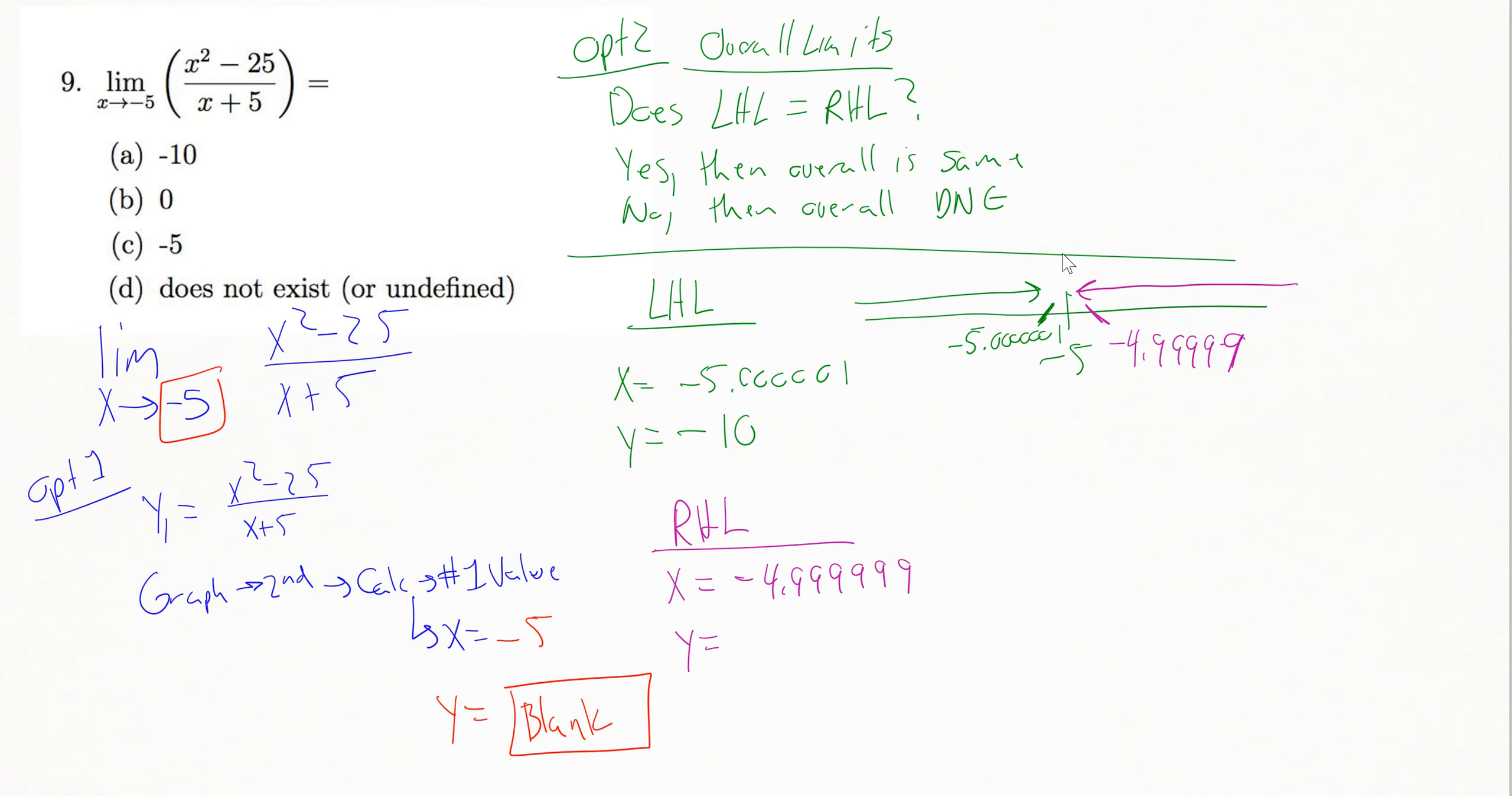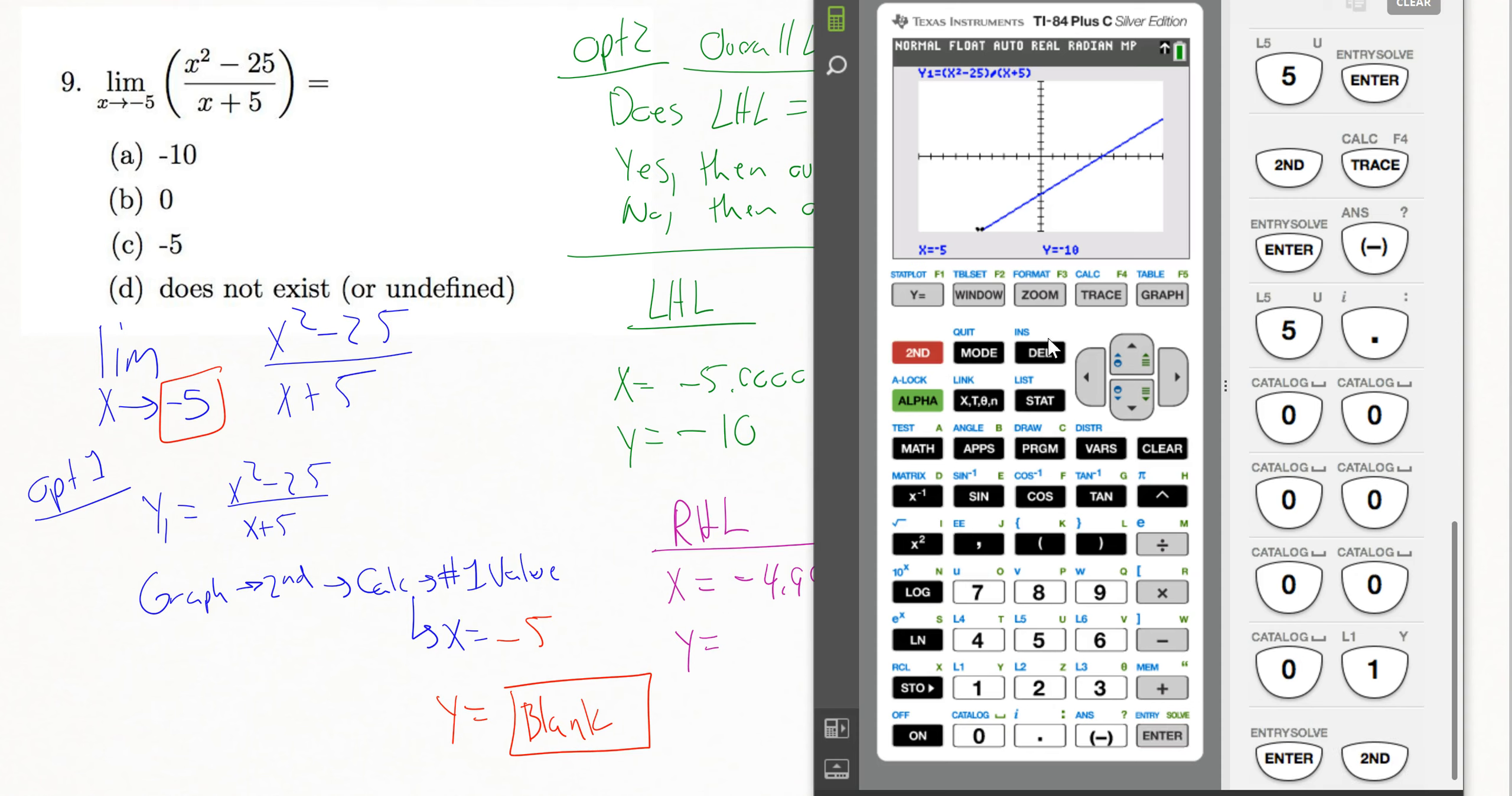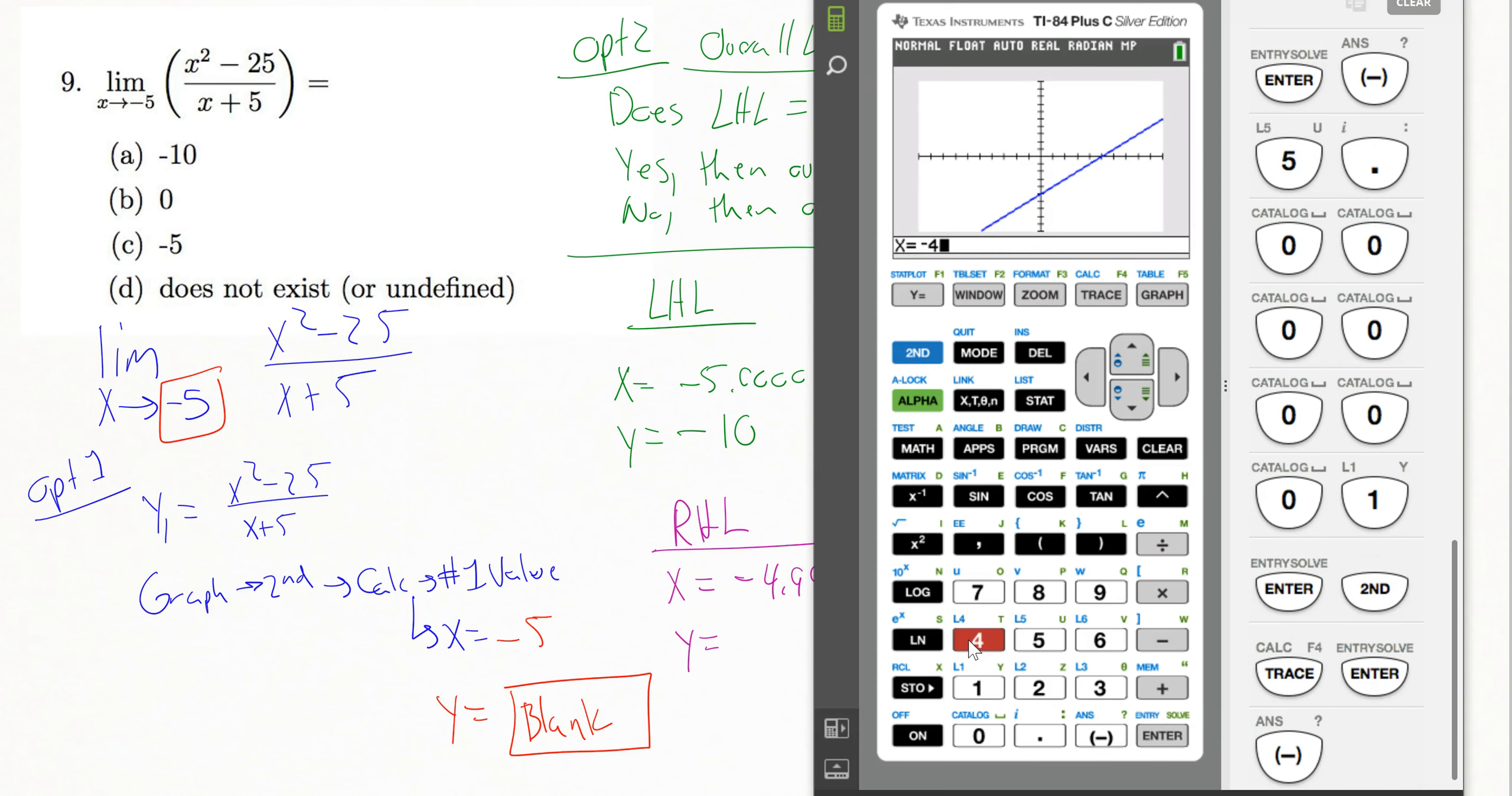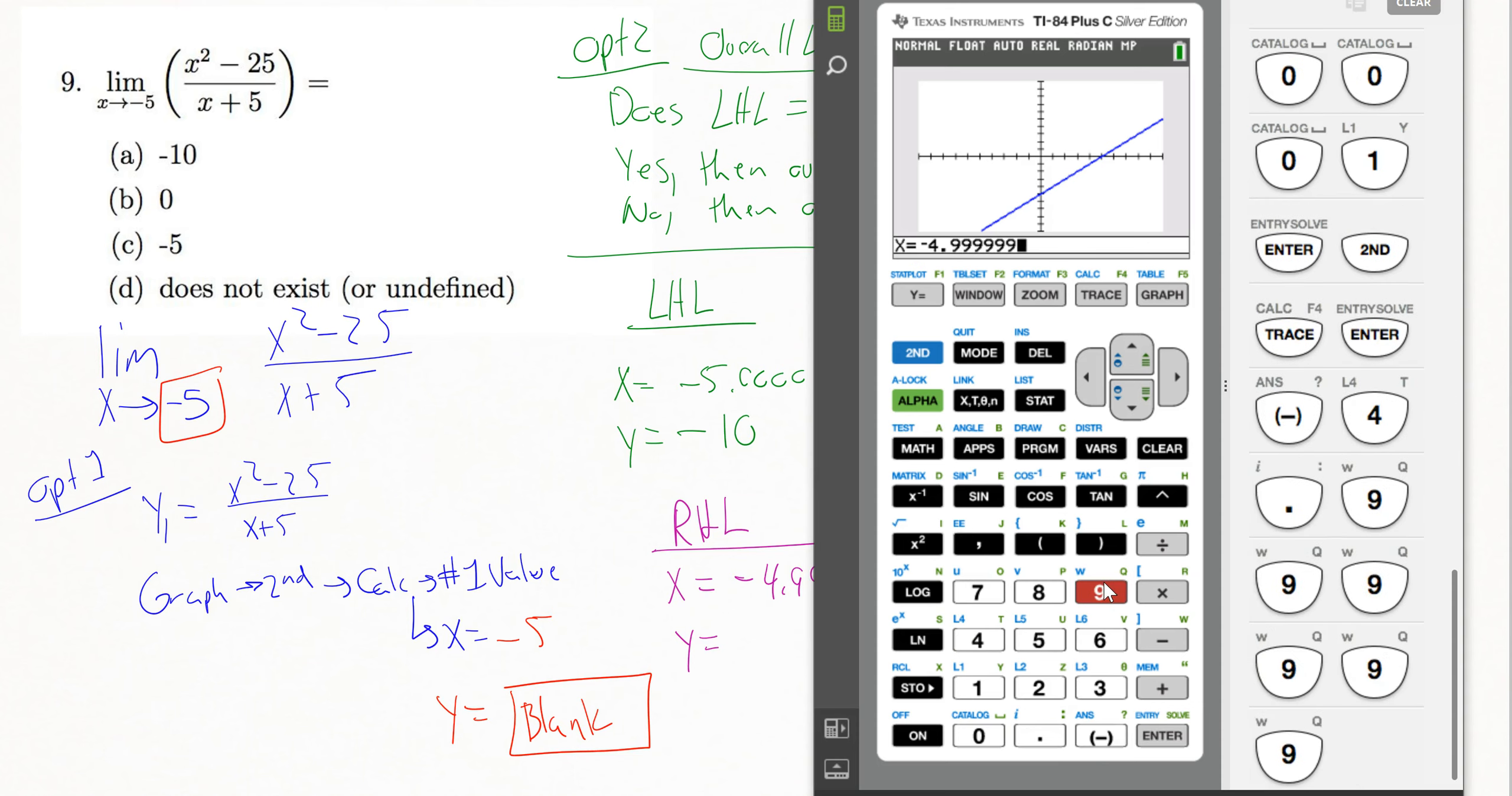If I type that in and my calculator gives me out negative 10 again, then I know that what I have is an overall limit of negative 10. So come back in, hit second calc, and then number one value, and then type in our number really close from the right-hand side. So negative 4.99999, hit enter.